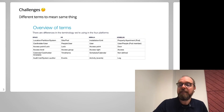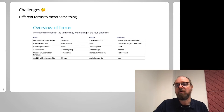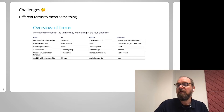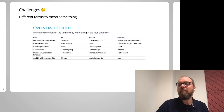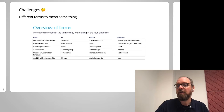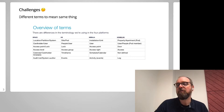In our case, we had a lot of different terms which were effectively meaning the same things across our different software platforms. We make access control solutions, and even a simple term such as a lock, a door, or an access point — we weren't being consistent with this term across our different platforms. And even for a term like "user", we were using things like "people", "members", or "cardholders". So we weren't consistent with our terms across all of our different platforms.